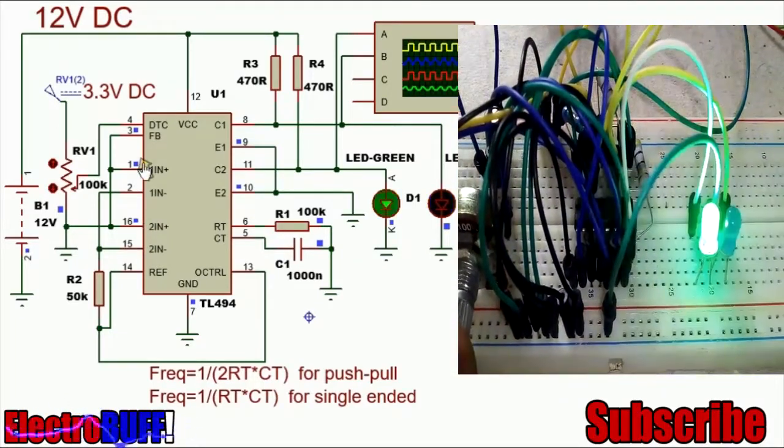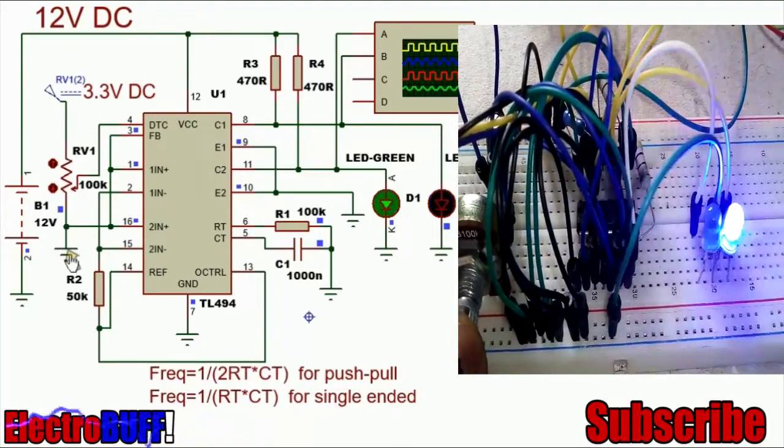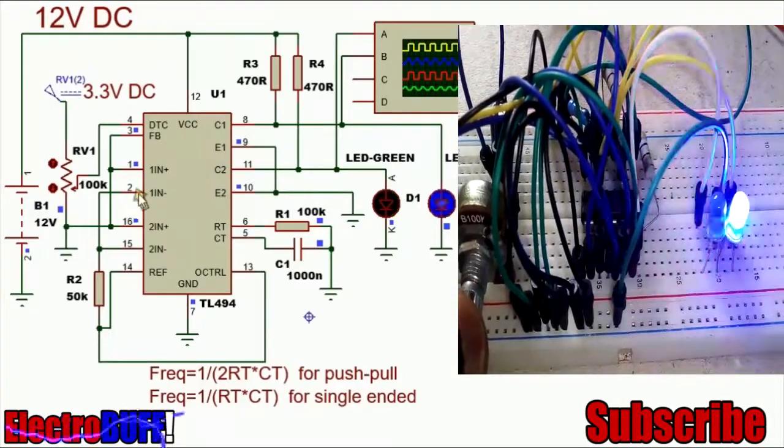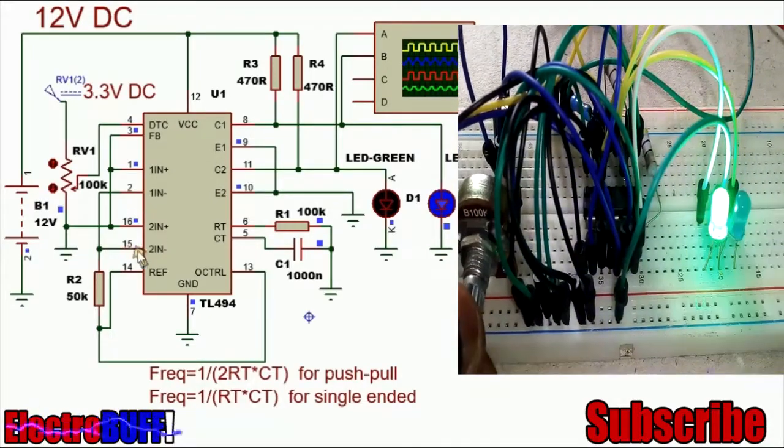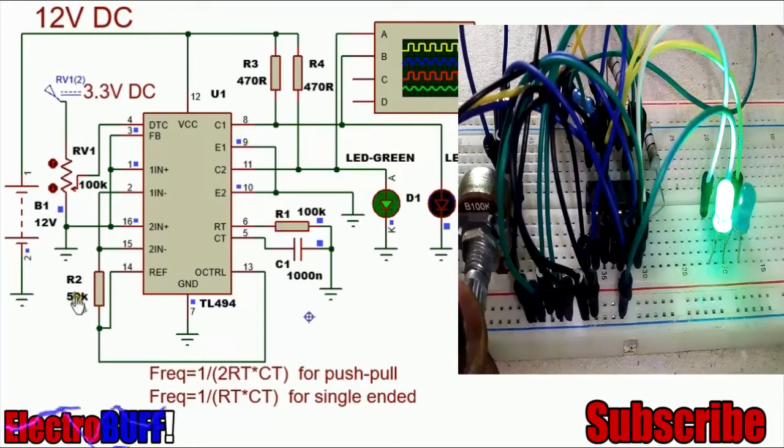You need to disable the error amplifiers by connecting the non-inverting terminals both to ground reference, then pulling up the inverting terminals pin 2 and pin 15 to 5 volts, which is generated by the reference pin, pin 14, through a 50K ohms resistor.